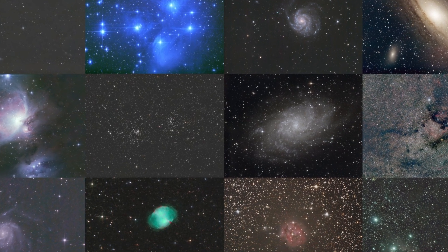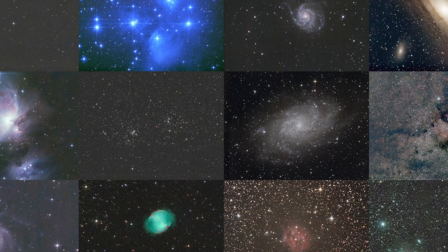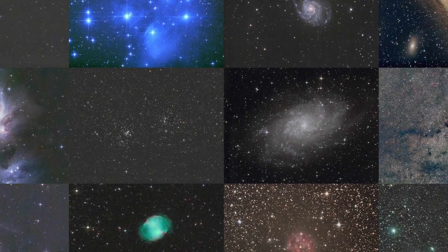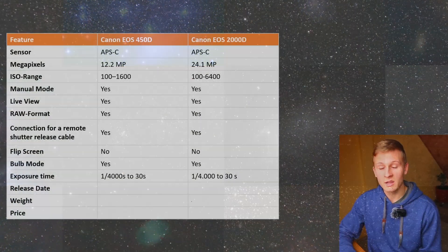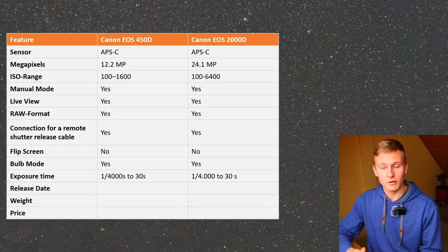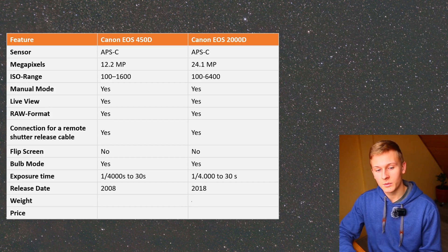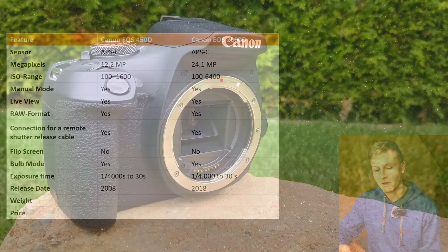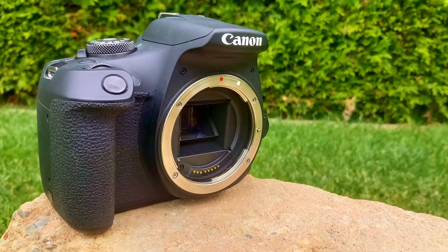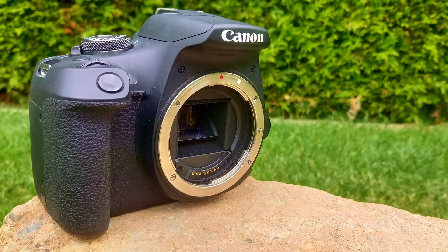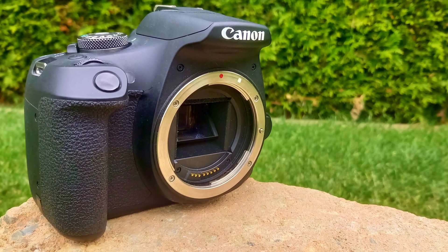The next aspect is the maximum exposure time, which is exactly the same for both cameras. However, there is a big difference when comparing the release dates. There is 10 years of difference — the Canon EOS 450D was released in 2008 and the Canon EOS 2000D in 2018. I'll discuss the release date more in my final opinion.